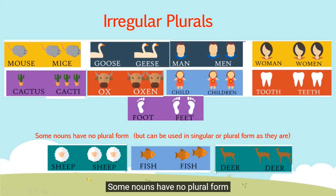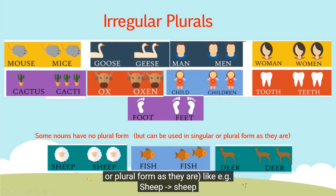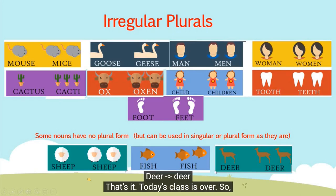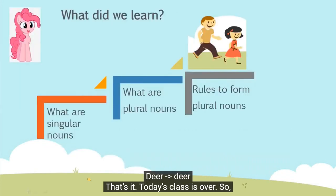Some nouns have no plural form but can be used in singular or plural form as they are. For example: sheep is sheep, fish is fish, deer is deer.